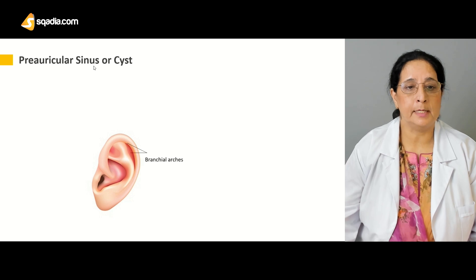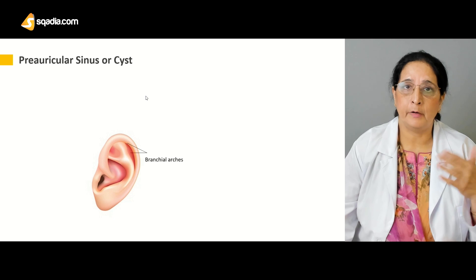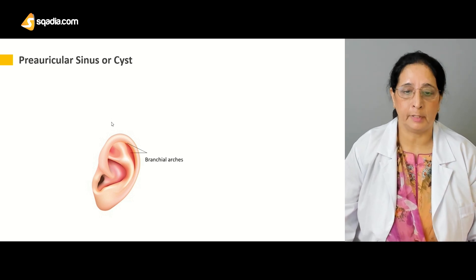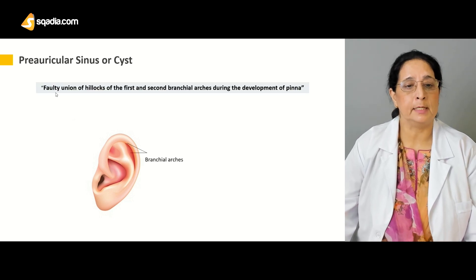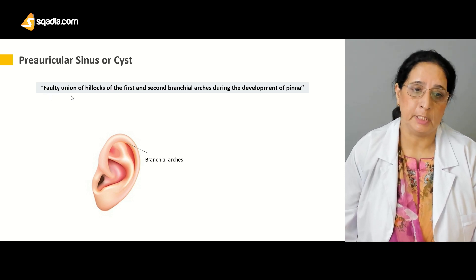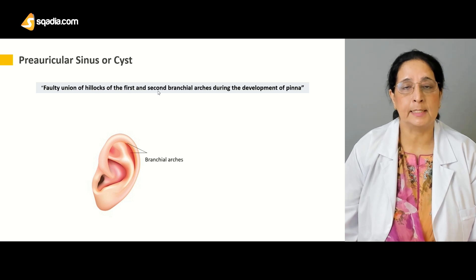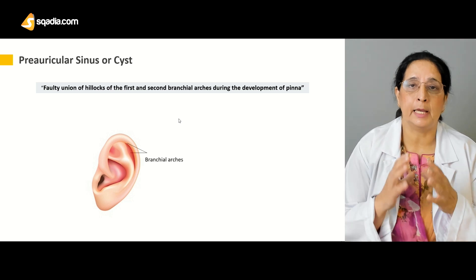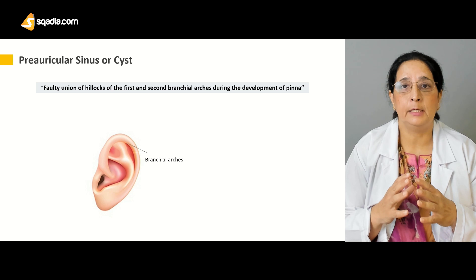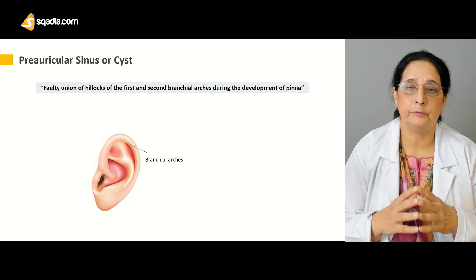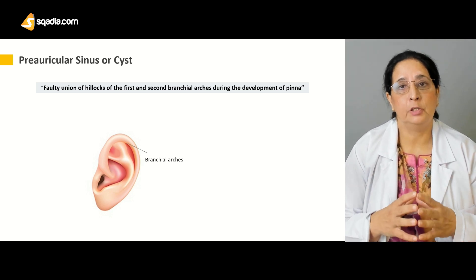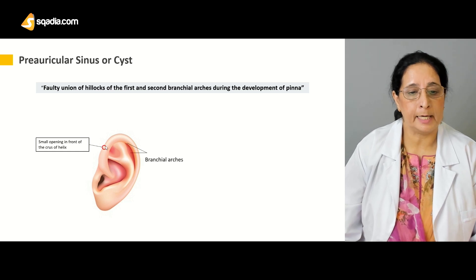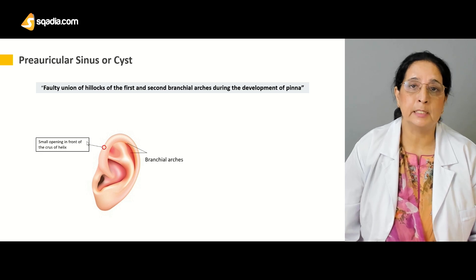Pre means before, auricle is the pinna, so the preauricular sinus or cyst is present in front of the auricle. It forms as a result of the faulty union of hillocks of the first and second branchial arches during the development of the pinna. When there is faulty fusion of these first and second branchial arches, it leads to the formation of preauricular cysts or sinuses.